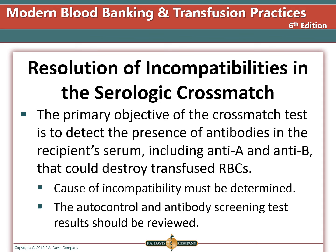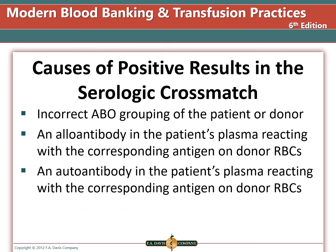An incompatible immediate spin cross-match is usually due to an incompatible ABO type. If the cross-match is positive, this means something has gone wrong — either you selected the incorrect donor type, there is an alloantibody in the patient's plasma reacting with antigens on the donor cells that were not present on the antibody screen cells, or the antigen type is not compatible.